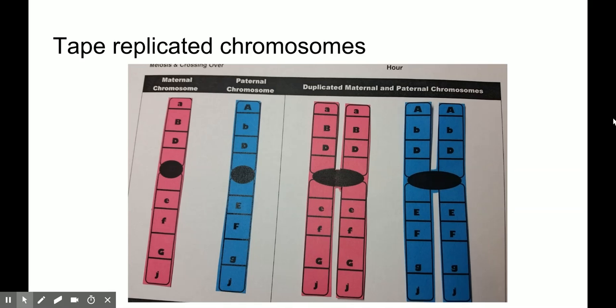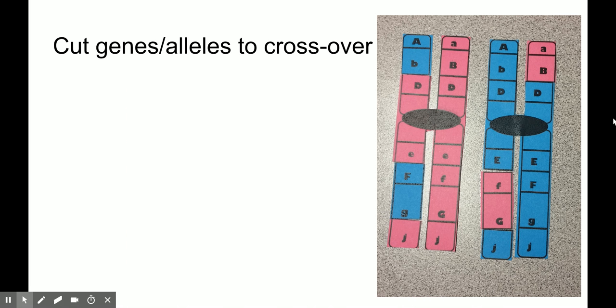Now crossing over is the actual exchange of equal segments of the chromosomes, which include genes or called alleles if there are different forms of the gene, between tetrads within the chromosome. And so you'll see on the top one that I cut off the top A and B from the blue chromosome and I switched it with the pink A and B on the left side of the maternal sister chromatids as well. In addition, I removed that E, that F and G from the blue and the pink and inserted those, leaving the Js where they belong.